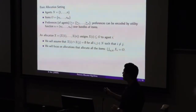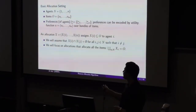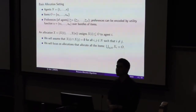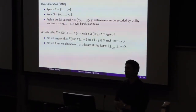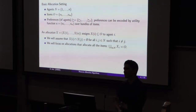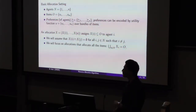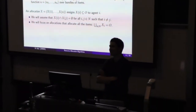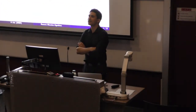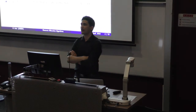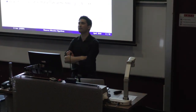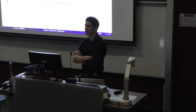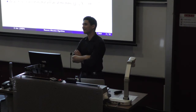You could have preferences encoded by a utility function UI for agent I, which maps each agent's utility for each particular subset. The main thing to take away is that an allocation setting involves a set of agents, a set of items, and each agent having some kind of preference or utility over subsets of items. We want to find some desirable allocation.